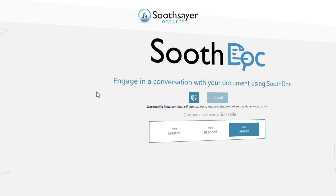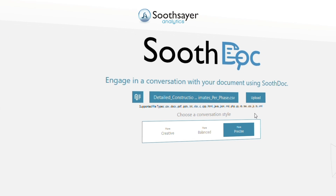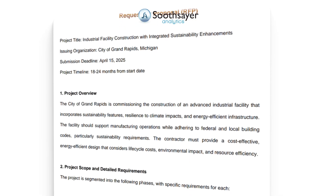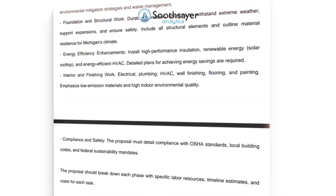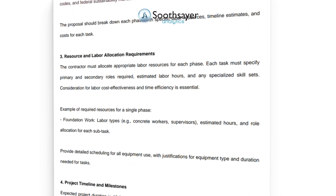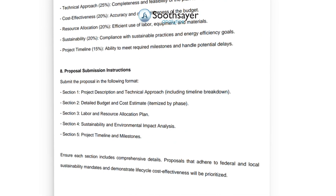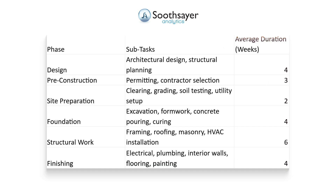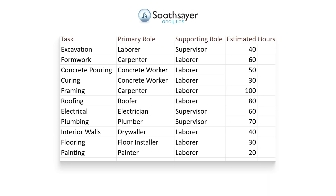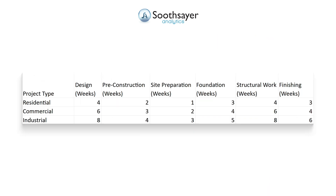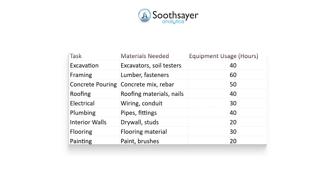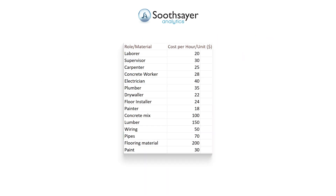Here we are uploading an RFP outlining a construction project's requirements, along with five spreadsheets detailing project phases, labor allocations, time estimates, material needs, and costs.